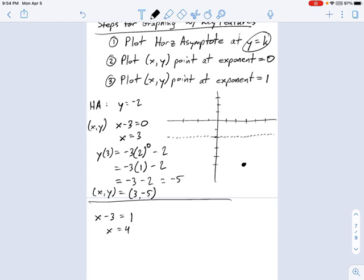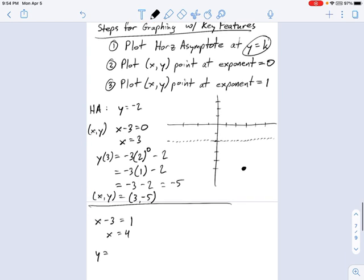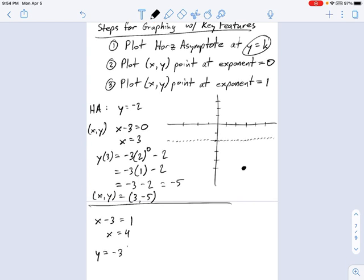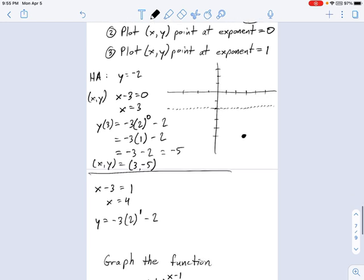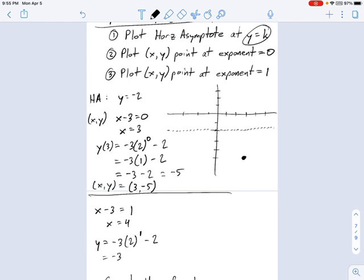And run through putting that into the equation again. What we get is y equals, what's our equation again? Yeah, negative 3 times 2 to the x minus 3, which is 1, minus 2. So that becomes negative 3 times 2 minus 2, which becomes negative 6 minus 2, which becomes negative 8. So this x, y coordinate is located at 4 in x, negative 8 in y.